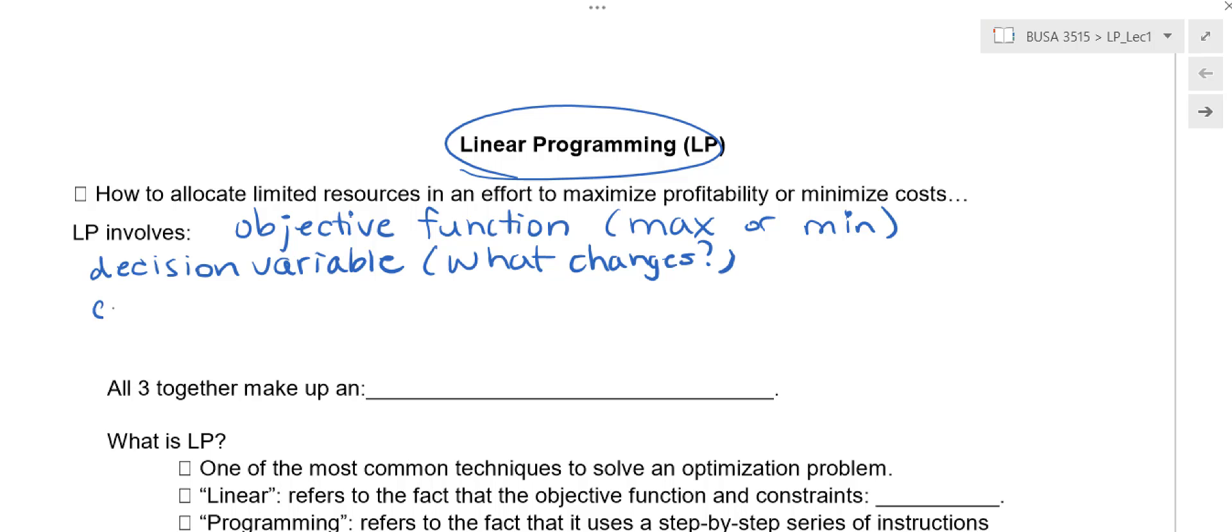And then our constraints. For example, let's say mill A can only take another 300 logs, they're almost at capacity today. Mill B can only take so much, the trucks can only haul so much, or you only have so much budget or you only have so many labor hours.